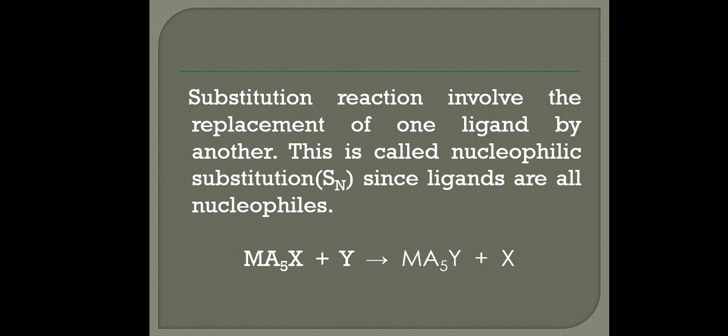One general reaction is shown in which an octahedral complex having six monodentate ligands — five of which are A and one is X — so MA5X reacts and one of the ligands gets substituted by Y. Y substitutes X and gives you MA5Y plus X. So the ligand X is getting replaced by Y.